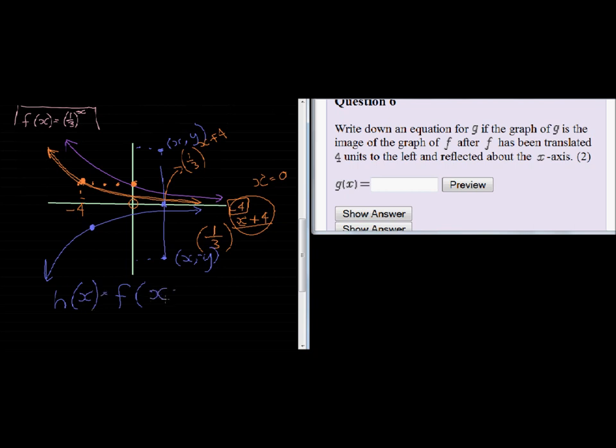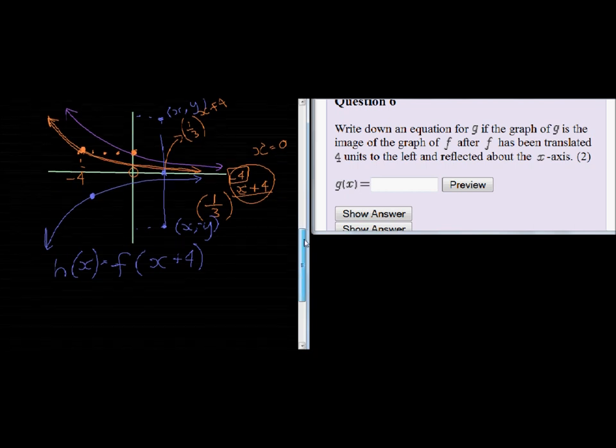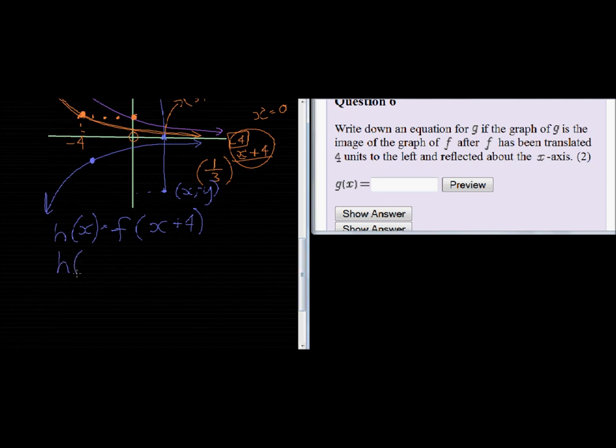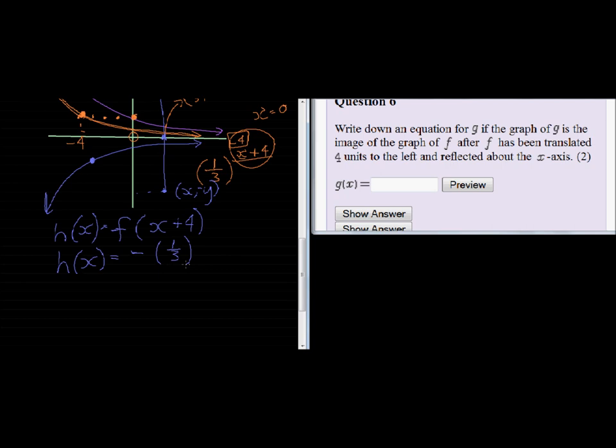My X value gets added a 4, and my Y value gets multiplied with a negative. So let's go and substitute all of that. H of X is therefore a negative in front of F, and F is a third to the power of X, but instead of X we put X plus 4. And there we have the value of H—I mean G of X, forgive me, that's a G.